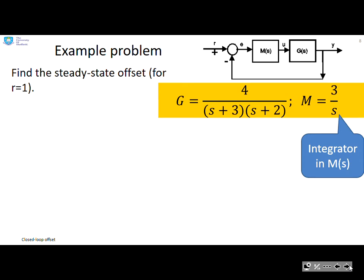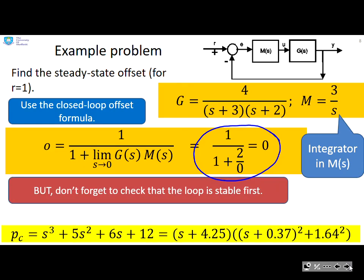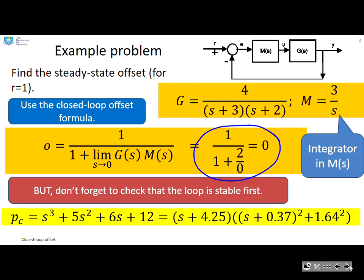Next problem then. So you see this time I've added an integrator into M of S. Again, let's look at our closed loop offset formula. And what you'll notice, we've got an integrator. And when we apply the formula, we get an offset of 0. Again, check for stability. And you can see I've got a root in a real root here in the left half plane and some complex roots. But those are also in the left half plane. So everything's fine.